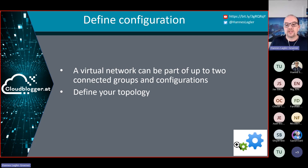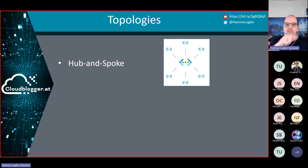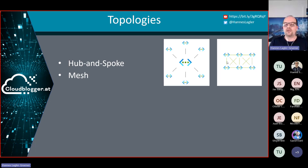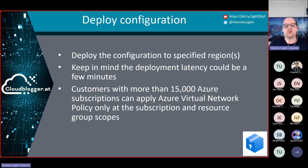Note that a virtual network can be part of two connected groups, so overlapping is possible. You then define your topology — what network topology you want to roll out in your environment. There are three options: the traditional hub-and-spoke environment where virtual networks connect to the hub and spoke-to-spoke traffic is routed through the hub; a mesh environment with direct connections between all virtual networks; or a hub-and-spoke architecture combined with direct connectivity between spokes.